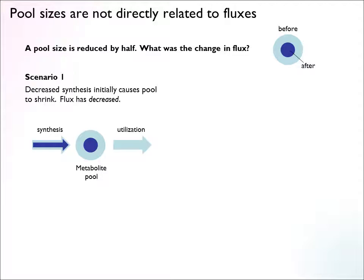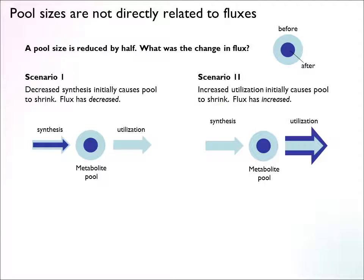You can think of at least two scenarios. One possibility is decreased synthesis of this metabolite, so a block upstream causes the pool to shrink, the system settles at a new steady state, and the flux is smaller. But you can also have a scenario of increased utilization — more demand causes the pool to go down initially, and then the system settles at a new steady state with an increased flux and a smaller pool size. So it's hard to tell conclusively one way or the other, and we should be careful drawing inferences about fluxes from pool sizes.